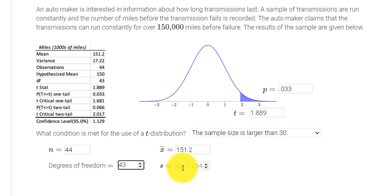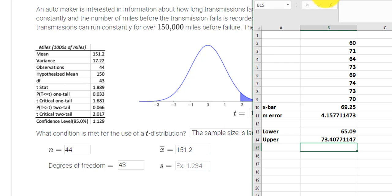And my standard deviation, it doesn't look like they give it to us, but I know the square root of the variance. So if the variance is 17.22, my standard deviation is equal to the square root of my variance. So in this case, it would be 4.15. And I just want to make sure I have enough zeros. Yep, 4.15.